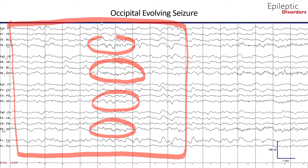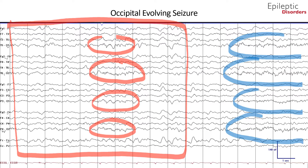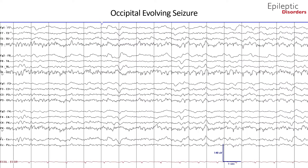Sure enough, in the last several seconds of the page, you can see over the O1 and O2 channels outlined in blue there appears to be low amplitude rhythmic buildup of fast frequency activity. In the second page of this seizure shown in bipolar montage, the previously noted O1 and O2 low amplitude fast activity has now evolved into faster quasi-rhythmic seven to eight hertz sharps.